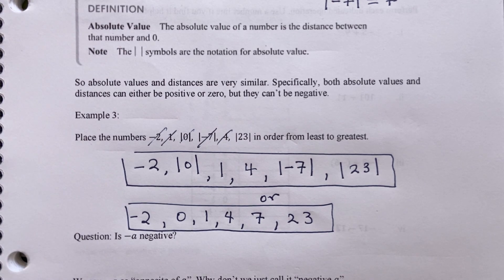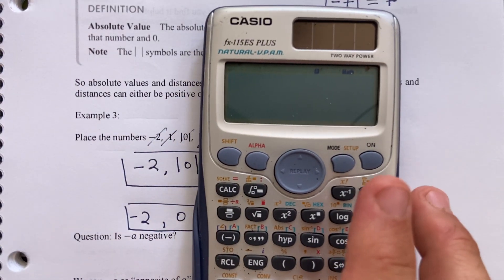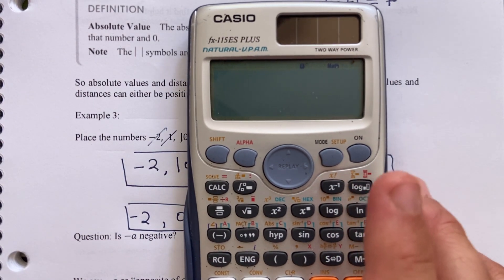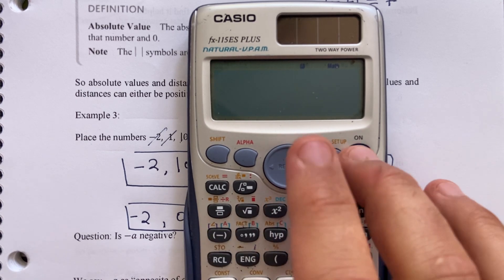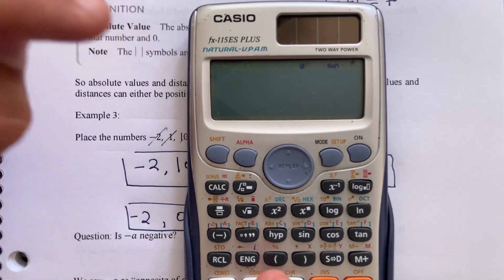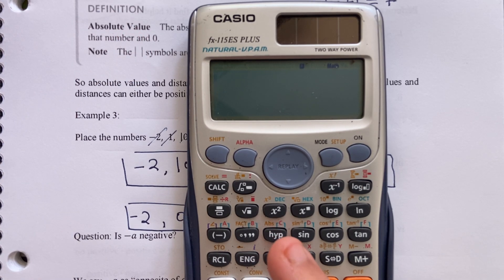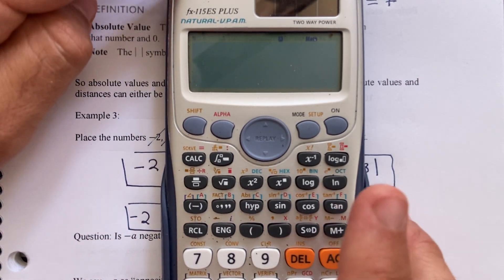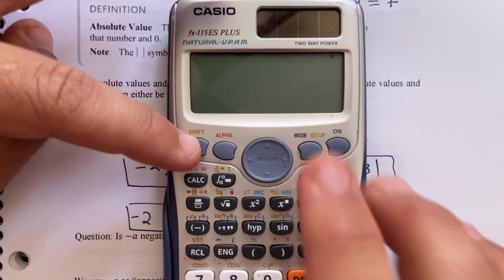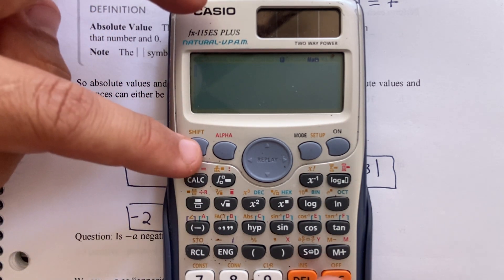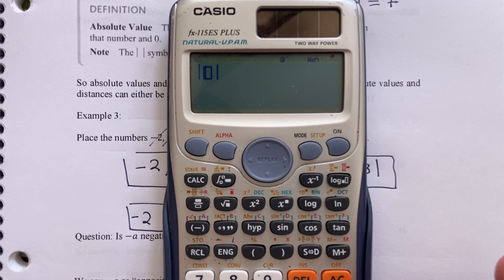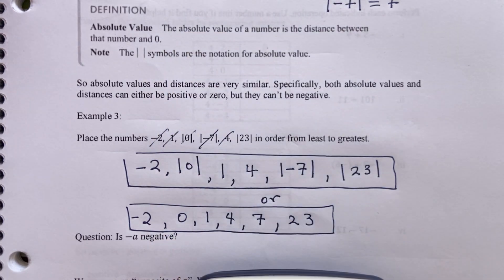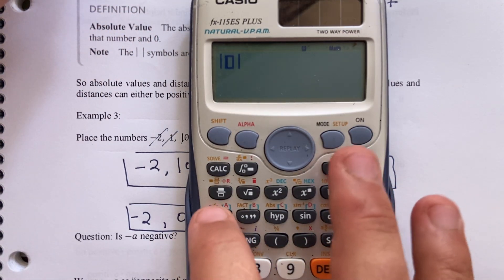On your calculator there's an absolute value button. This is the calculator I'm going to suggest you use for the semester. See where it says HYP — there's actually another option behind that labeled ABS. To access anything in yellow, go Shift and then hit HYP. The vertical bar symbol appears, and you can type in negative seven just to confirm.